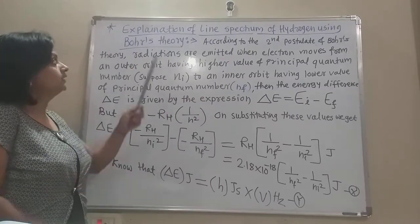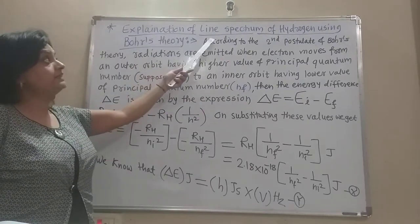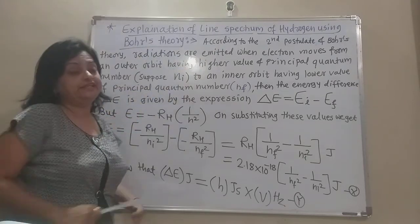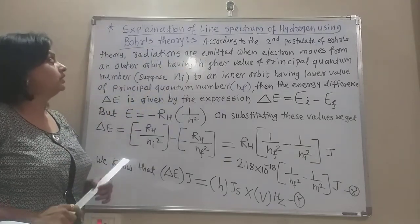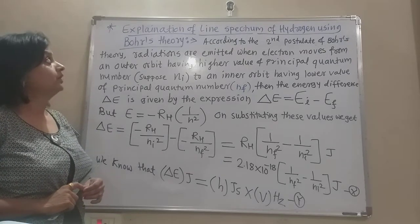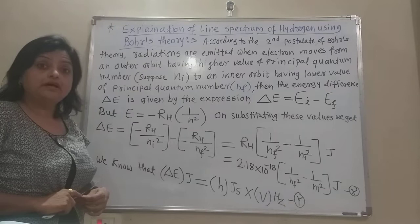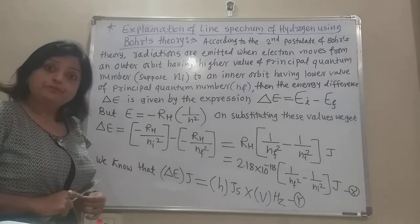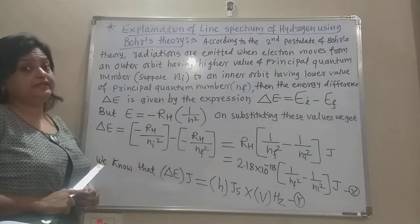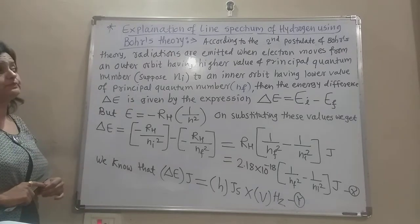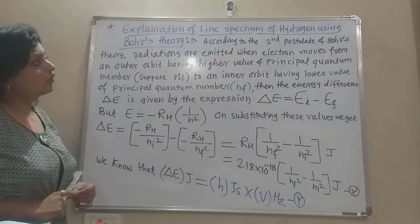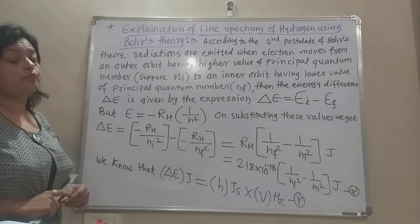Now we come to the explanation of the line spectrum of hydrogen using Bohr's theory. The emission spectrum of hydrogen, which was given by different scientists, is explained by Bohr. According to the second postulate of Bohr's theory, we derive this explanation.